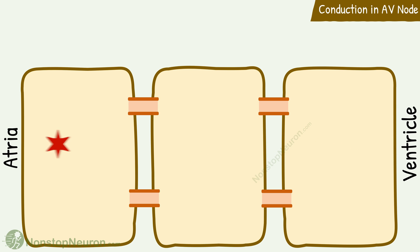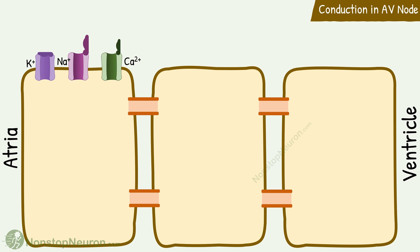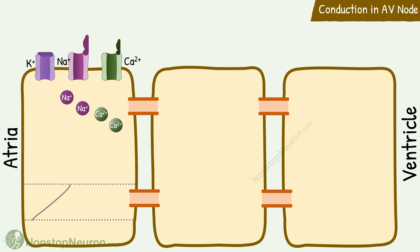As impulse enters from the atrial side, the first cell gets excited. The electrical activity in the AV node is similar to that seen in the SA node. It starts with the slow entry of calcium and sodium, which leads to a slow rise in potential. At the threshold, there is a rapid entry of calcium.